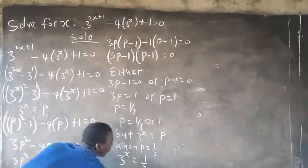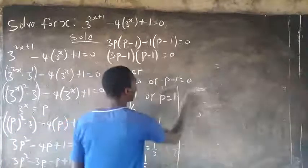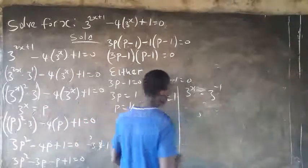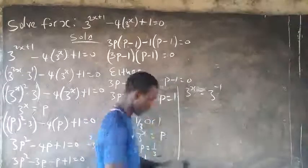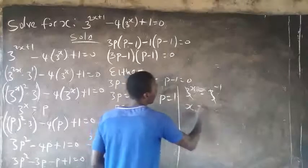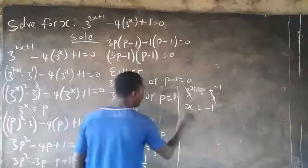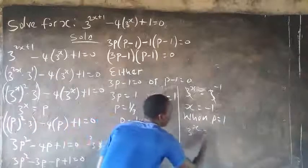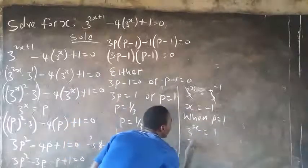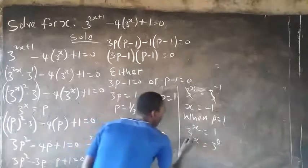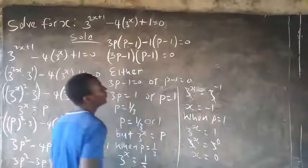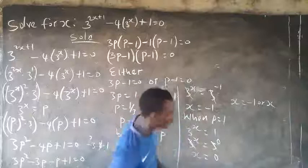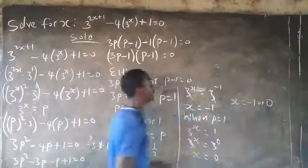Recall that 3 raised to the power of s equals p. When p equals 1 over 3: 3 raised to the power of s equals 1 over 3, which is 3 raised to the power of minus 1, so s equals minus 1. When p equals 1: 3 raised to the power of s equals 1, and since 3 raised to the power of 0 is 1, s equals 0. Therefore s equals minus 1 or s equals 0.